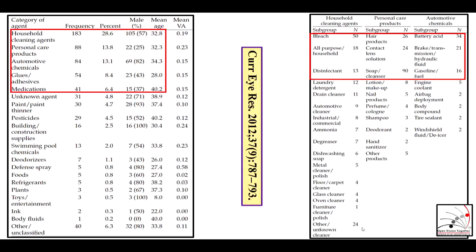This data from the western world shows that household cleaning agents are the most commonly implicated agents — mostly alkaline agents — followed by automotive chemicals, glues, and adhesives. If you subcategorize further, bleach is the most common offender. In personal care products we have hair products and contact solutions, and in automotive chemicals, battery acid, which is mostly sulfuric acid, is the main offending agent.